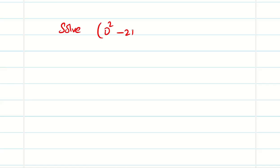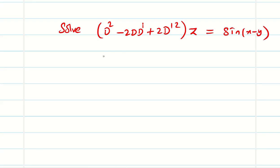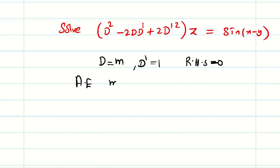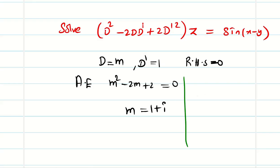Let us take a simple problem. Solve (D² - 2DD' + 2D'²)z = sin(x - y). As usual, we take D = m, D' = 1, and make the RHS zero to find the auxiliary equation. The auxiliary equation is m² - 2m + 2 = 0. The roots are complex. Using the quadratic formula, we find m = 1 ± i.